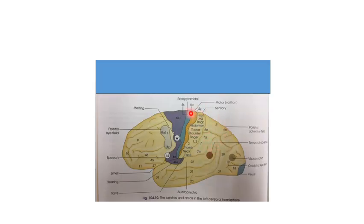In the inverted homunculus, you will find finger, face, neck, thumb, shoulder, thorax, abdomen, thigh, leg, and foot arranged in order. This schematic diagram can be drawn in exams showing upper lip, lower lips, face area, and thumb area — these areas are much larger because of the importance and number of receptors.